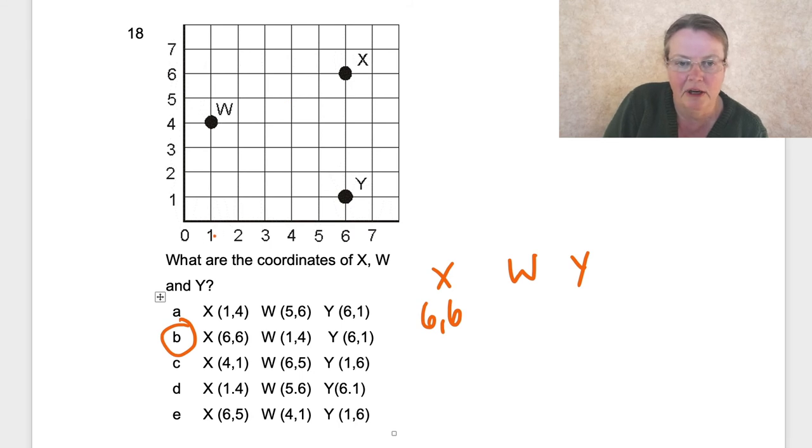W is (1,4) - one, four - which it is. And then Y is (6,1) - six, one.